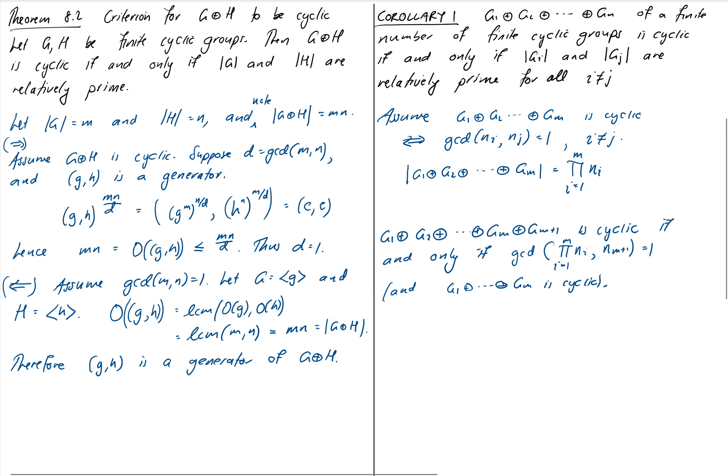If we take G1 plus G2 up to Gm and throw in an additional group Gm+1, that's cyclic if and only if the order of the first block, which is the product from i equals 1 to M of n_i, is relatively prime to the next one, n_m+1. Because we're using theorem 8.2 directly here.